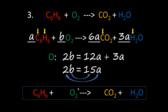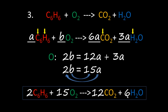In step four, we substitute the values: a is 2, b is 15. Two times 6 gives us 12, and two times 3 gives us 6. The equation is balanced.